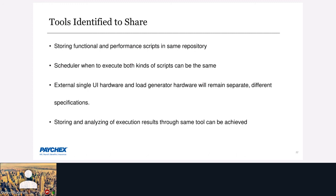From a tools and infrastructure perspective: store functional and performance tests in the same repository — it keeps you mentally thinking of both as covering the same application, whereas right now they're in separate repositories. Use the same scheduler for both functional and performance tests. Hardware may always differ — UI hardware has different specs from load test hardware — but storing, analyzing, and displaying results together in one dashboard is absolutely achievable.